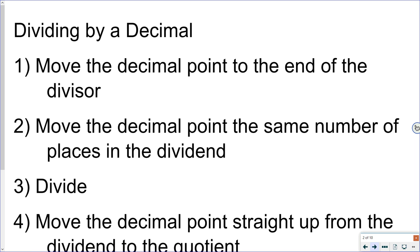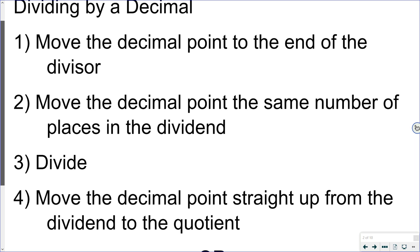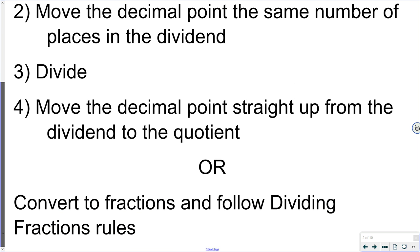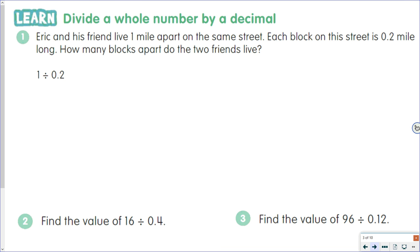Then we're going to divide as we always have done. Once we've done our division, we move that decimal point straight up from the dividend into the quotient — our answer. We do have a secondary option: we could convert our decimals to fractions and then follow our dividing fractions rules that we learned earlier.